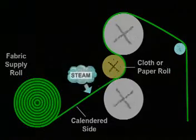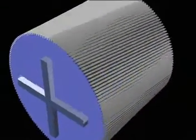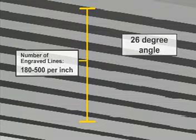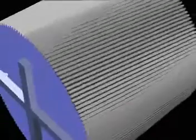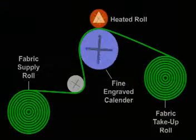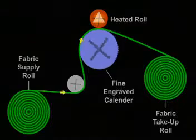Schreiner calendaring is a specialized system. In this scenario, two rolls are used: a small roll and a larger, finely engraved roll. This large, heavy metal roll is engraved at a 26-degree angle with fine or shallow lines. The number of lines can range from 180 to 500 per inch, but are most often 300 lines per inch.